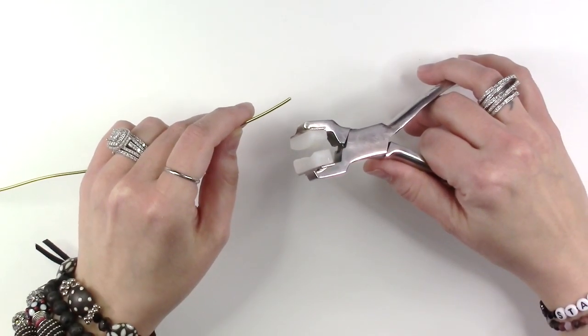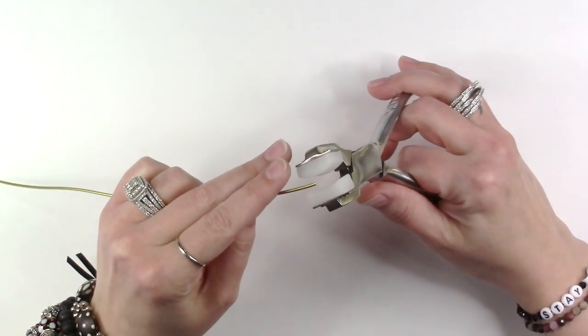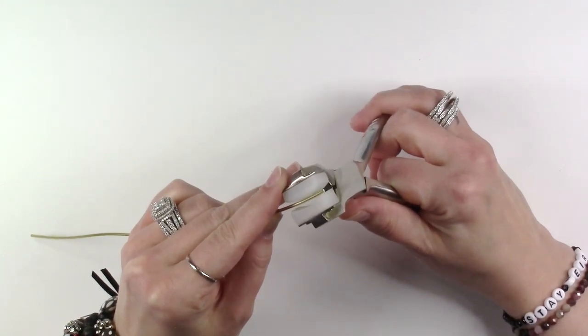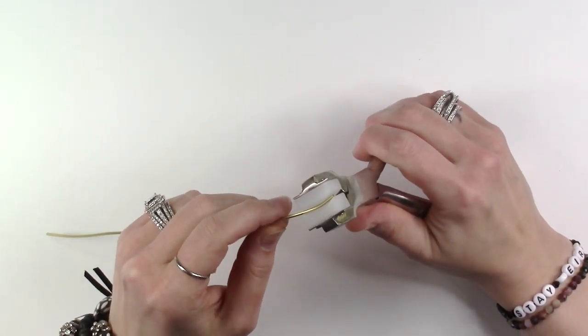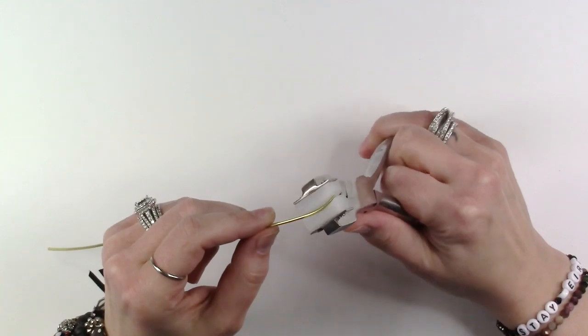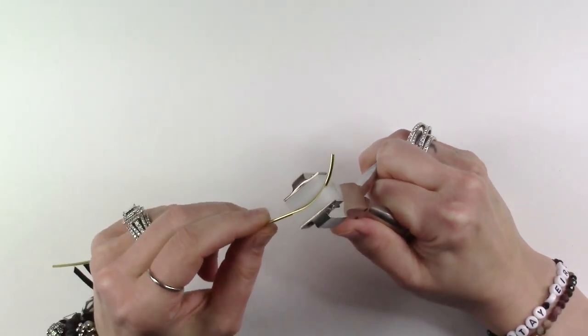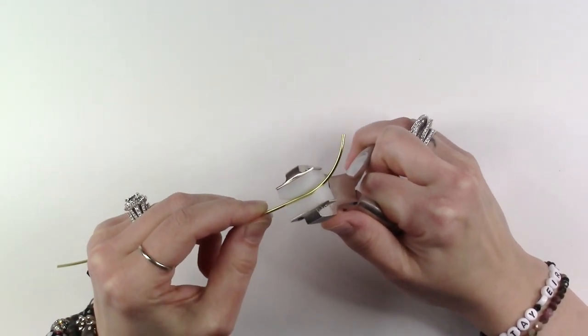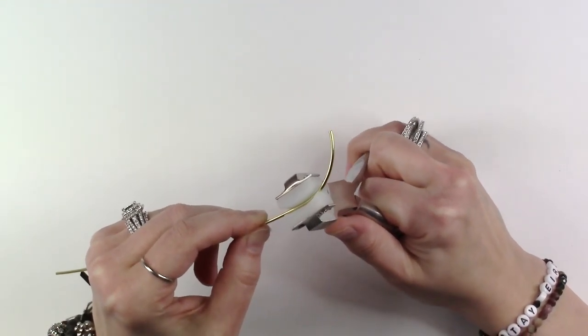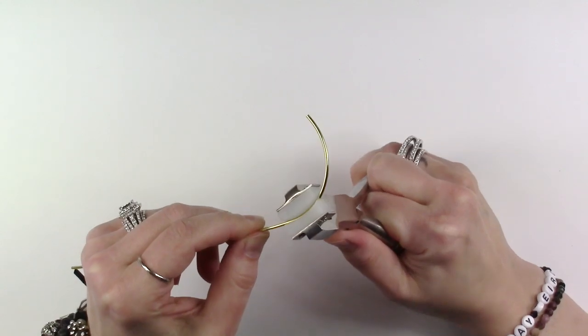To begin creating the shape of your bangle, place the end of your 14 gauge wire into the jaws of the bracelet bending pliers and close the pliers over the wire. Continue opening and closing the pliers along the length of the 14 gauge wire to create a round shape.